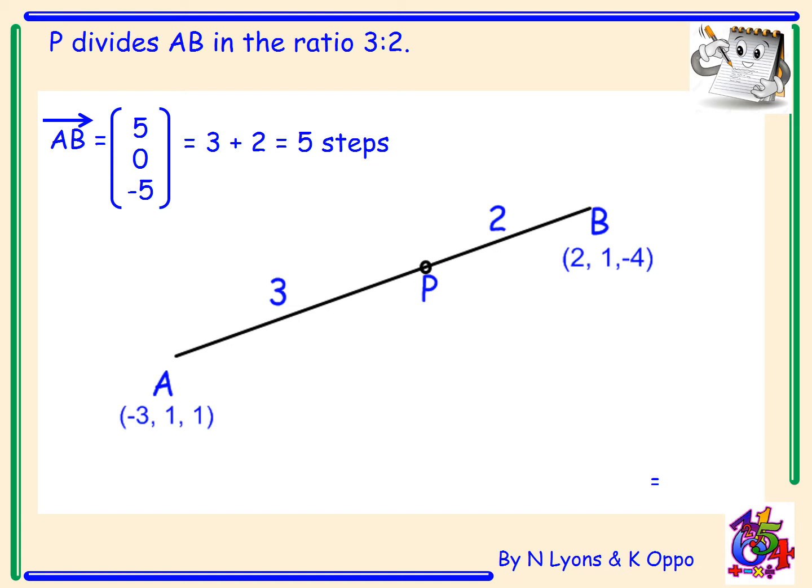If 5 steps is (5, 0, -5), then 1 step, what does that equal? I just have to divide by 5 and I get the vector (1, 0, -1). However, back to A. I'm starting at A and I want to get to P. That's not 1 step, that's 3 steps. So AP is the vector, it's equal to 3 steps. So that equals (3, 0, -3).